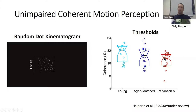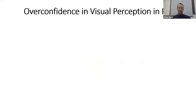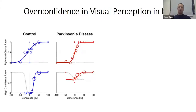We tested random dot kinematograms — dots on a screen — where participants need to judge whether the dots are moving right or left, and we can play with coherence. We found that in terms of basic thresholds, Parkinson's patients did not differ from the age-matched group or the young group — if anything, marginally, not significantly, they were better. So the deficit of visual self-motion seems to be in integrating the visual cues to understand where I'm moving in space, not just a basic visual motion deficit.